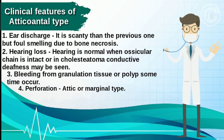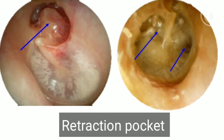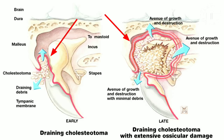Number four, perforation is attic or marginal type. Number five, an invagination of the tympanic membrane is seen in the attic or posterior superior area of pars tensa, which is called a retraction pocket. As time passes, it wraps around the promontory and ossicles, leaving behind no space in the middle ear cavity.